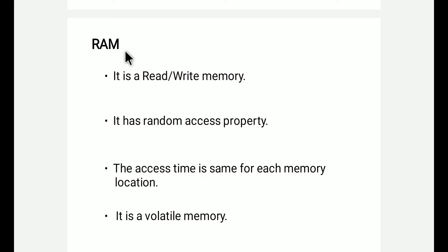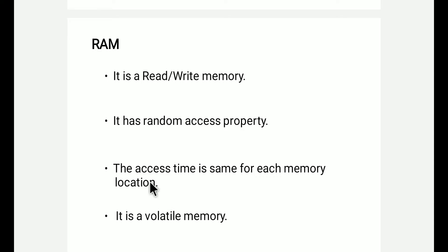Next, RAM — it is a read-write memory. We can both read as well as write. It has random access property, meaning the access time is the same for each memory location. We can access data from RAM at any location.